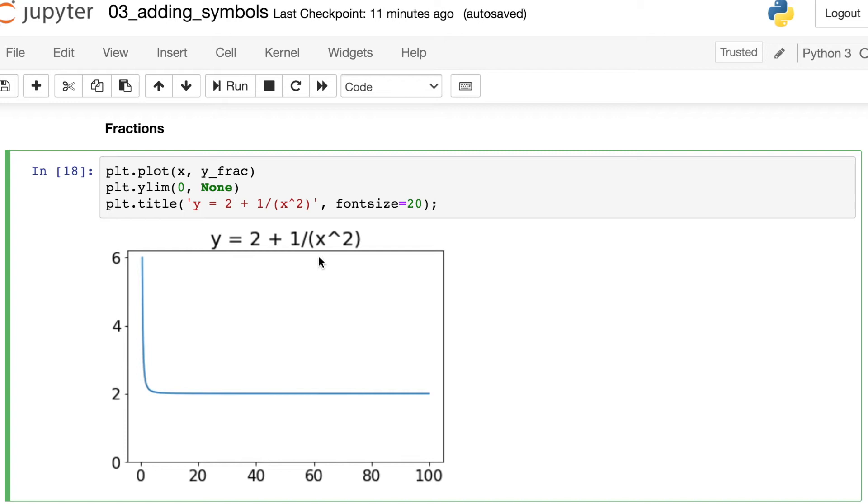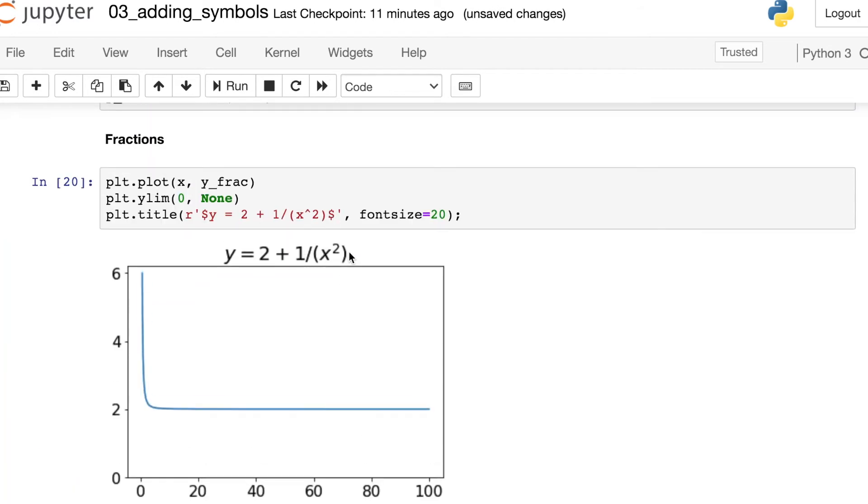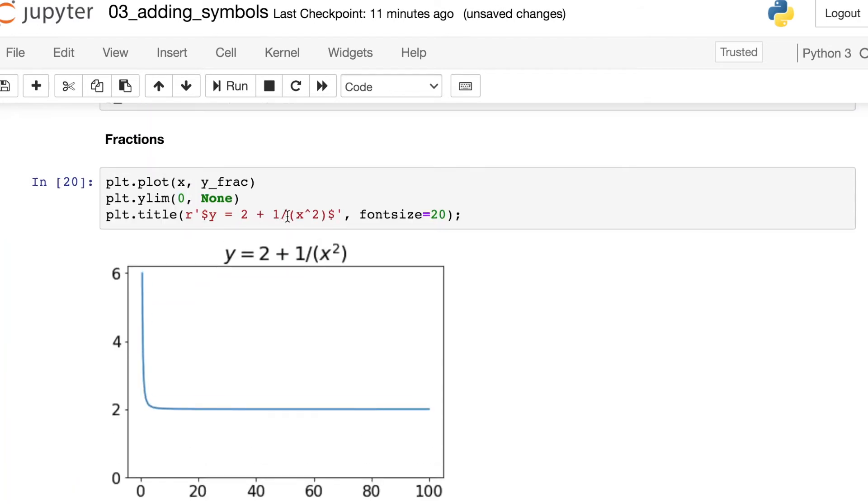But if you want to use TeX to indicate this, once again, we need to prefix with an R, then surround everything by dollar signs. And what we also need to do is convert this fraction. The way to do a fraction in TeX is to do backslash frac.